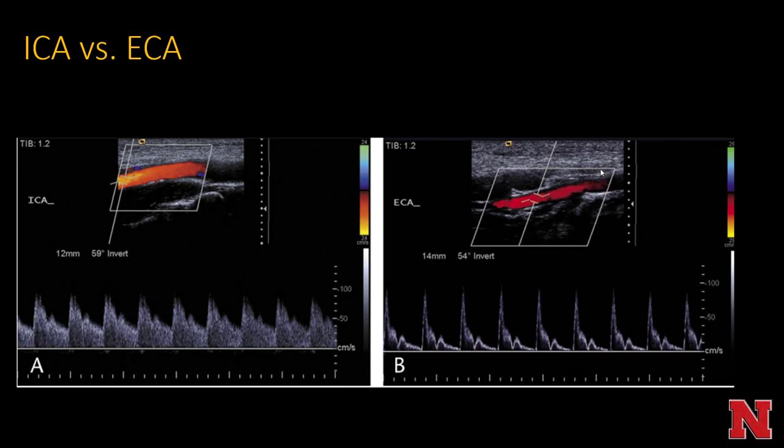A classic radiology question involves distinguishing the internal carotid artery from the external carotid artery. The external carotid artery has branches — if you see a branch, it's the external. The internal carotid does not have branches in the neck.